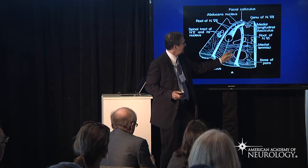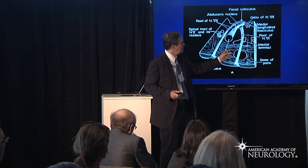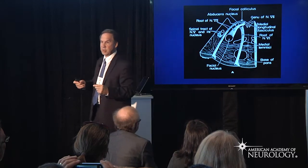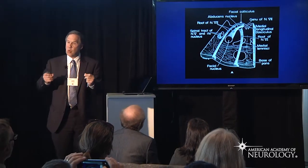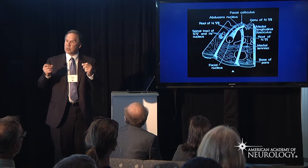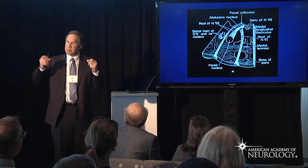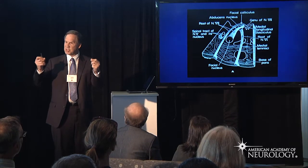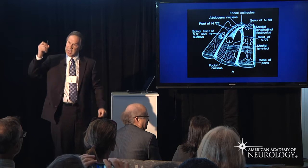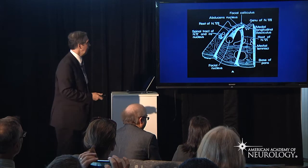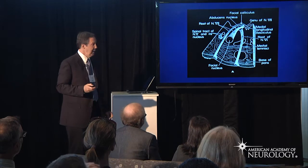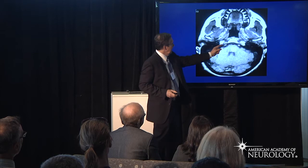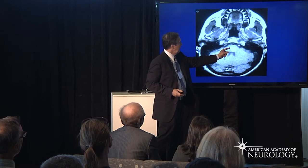The lesion just extended anteriorly to catch some of the corticospinal tracts. Neurologists are better than an MRI, particularly in the brainstem — and the lesion is demonstrated here. She had a hemorrhage exactly where you thought it would be.